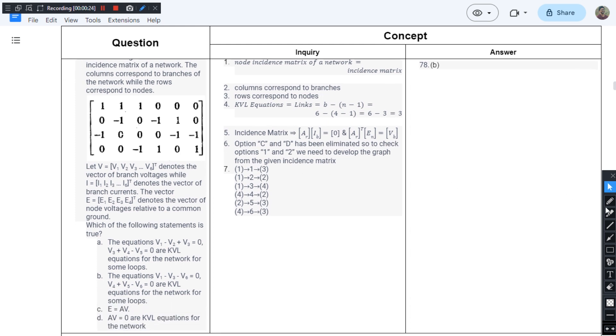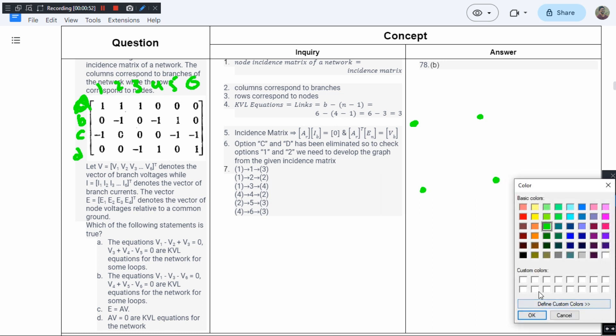This question is to be solved like the previous question. Let us name them: this is A, B, C, D. These are branches 1, 2, 3, 4, 5, 6. You have to make it a habit of drawing the graph whenever you're asked to solve an incidence matrix question.